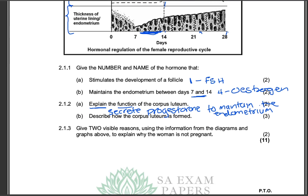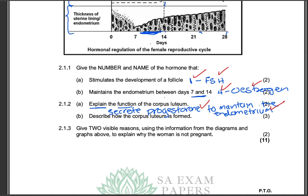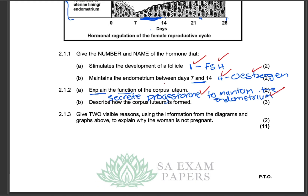Question 2.1.3: Describe how the corpus luteum is formed, for three marks. I notice that many learners attempt one or two mark questions but leave blank spaces when they see questions worth three, four, or five marks — please don't do that. Attempt each and every question. Describing how the corpus luteum is formed is very straightforward.